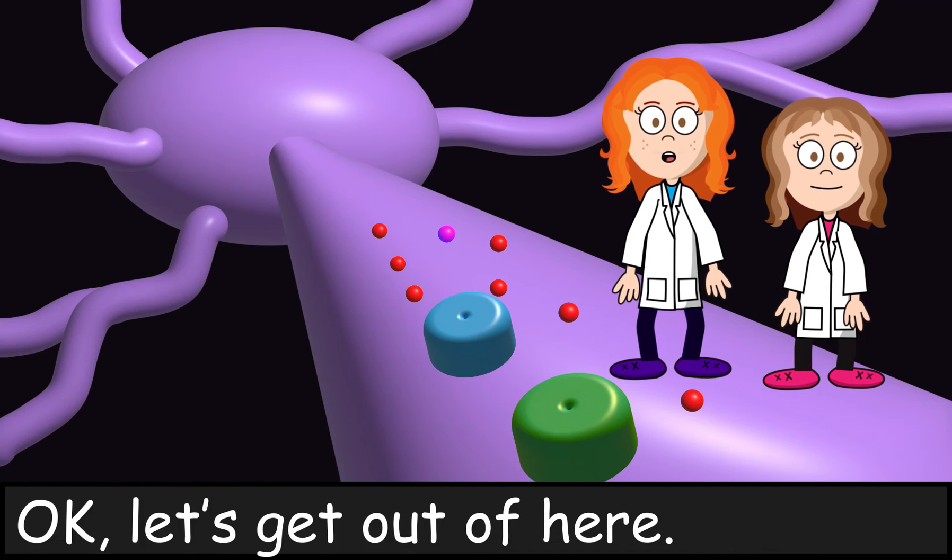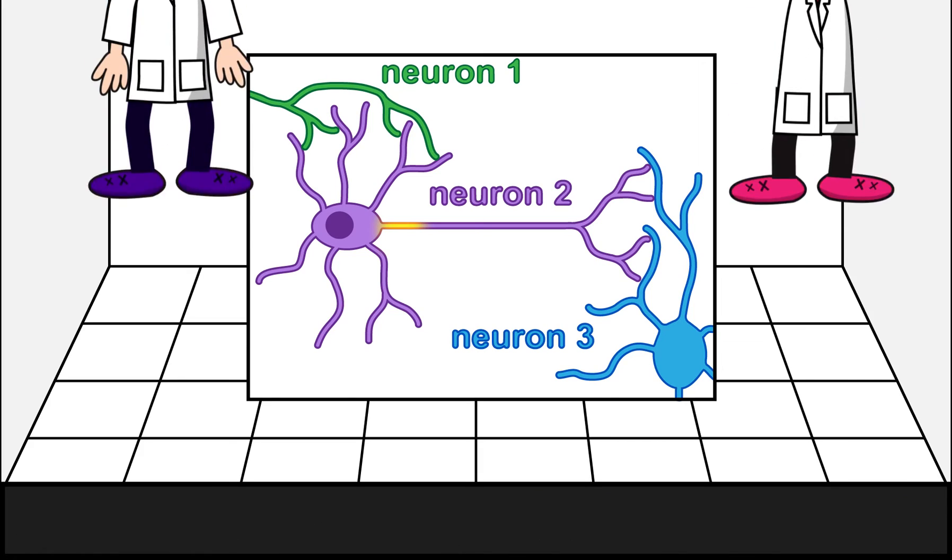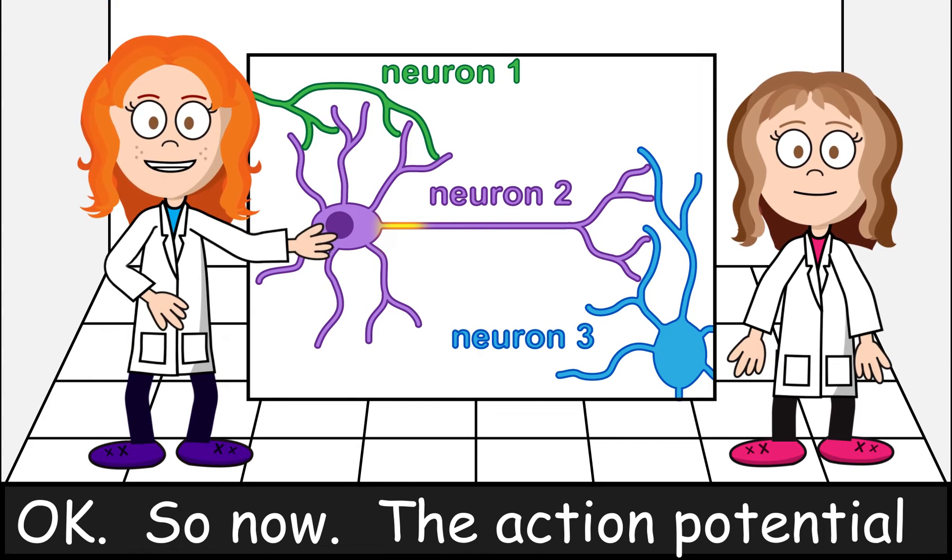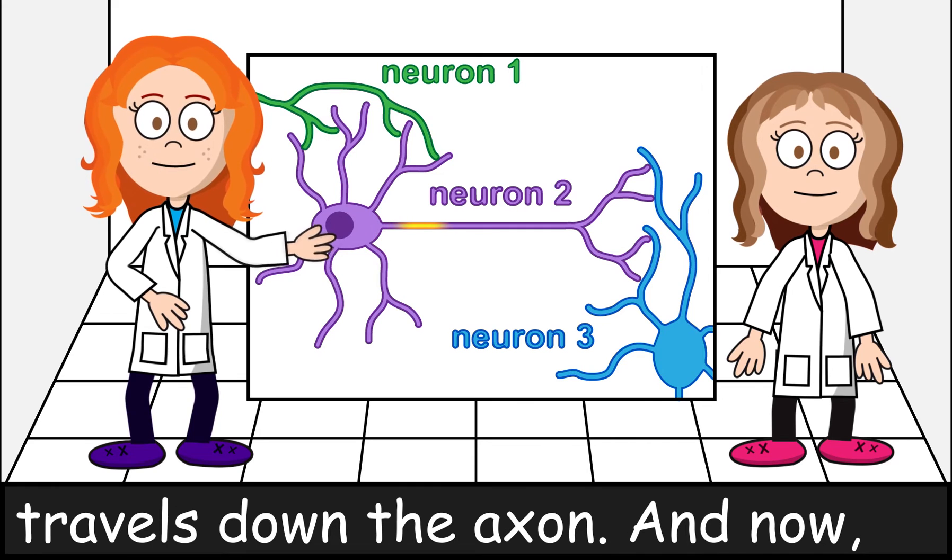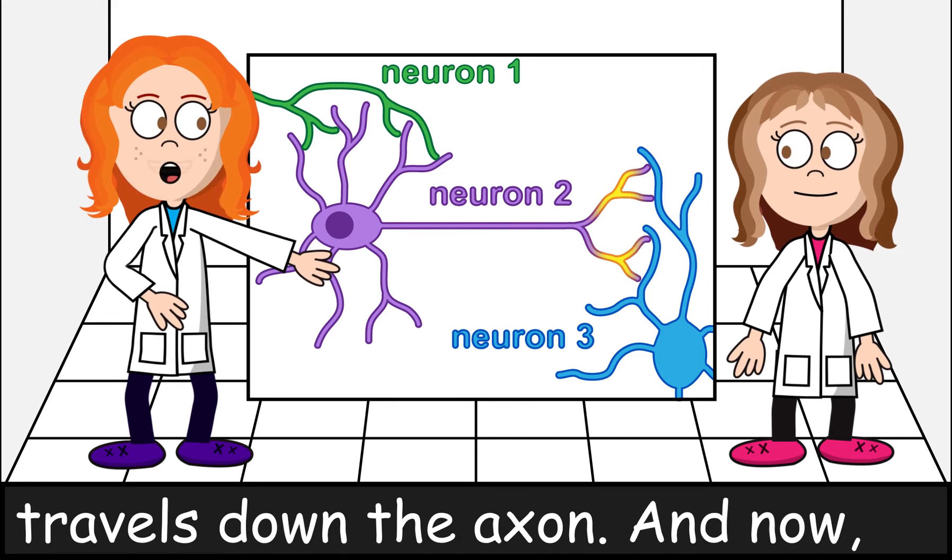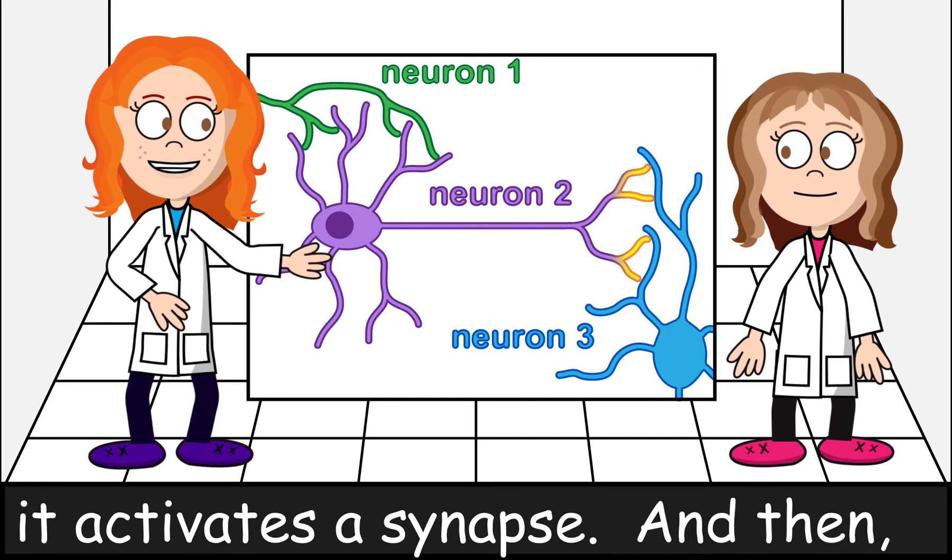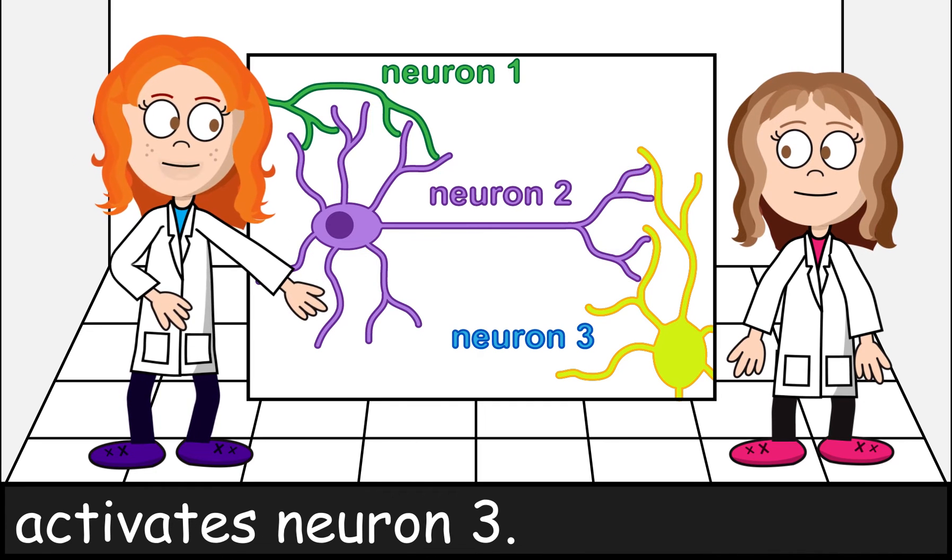Okay, let's get out of here. Okay, so now the action potential travels down the axon. And now it activates the synapse. And then activates neuron three.